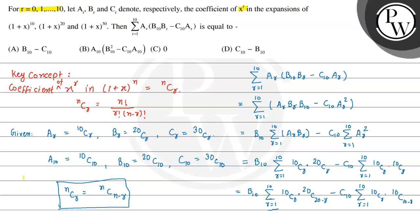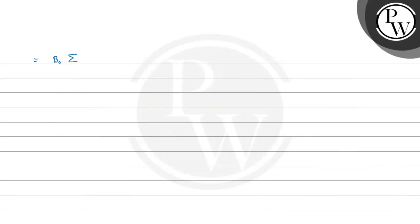Here r is varying from 1 to 10, but in the question r goes from 0 to 10. So the r equal to 0 term is missing. If we put r equal to 0, we get 10C0 times 20C20, both equal to 1. Similarly, in the second term, 1 is also missing. So we add and subtract 1 in both terms, rewriting the summation from r equal to 0 to 10.